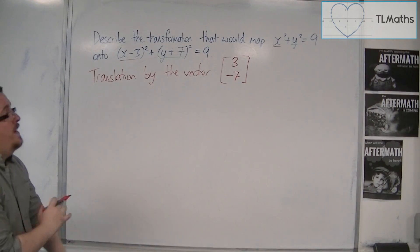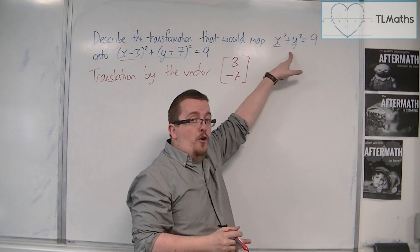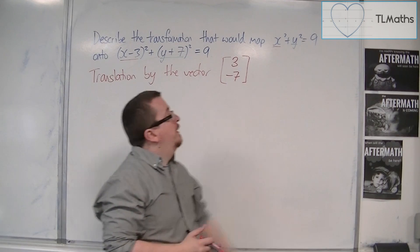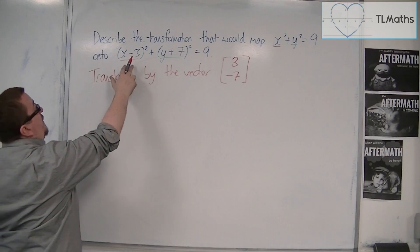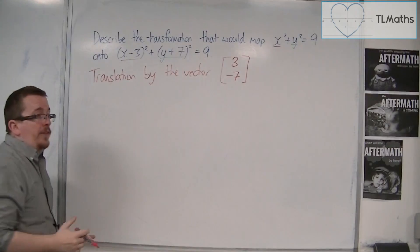So previously, because we know from the previous video that this is a circle centered at the origin with radius of 3, we now have a circle that is centered at 3 minus 7 with radius 3.